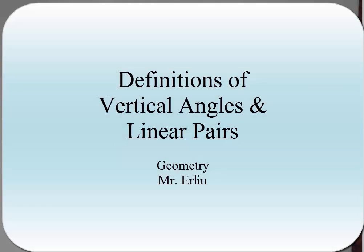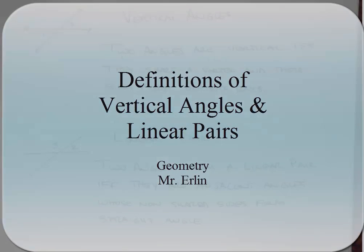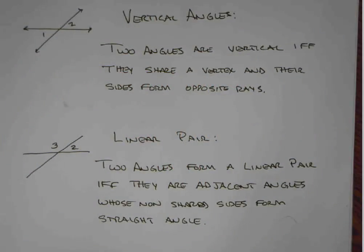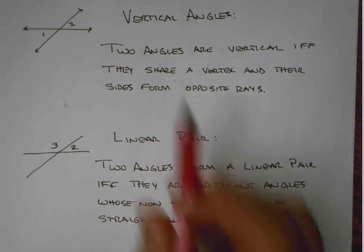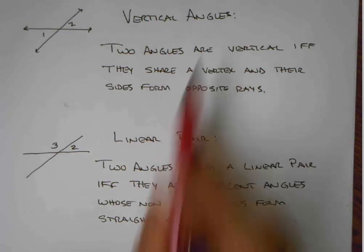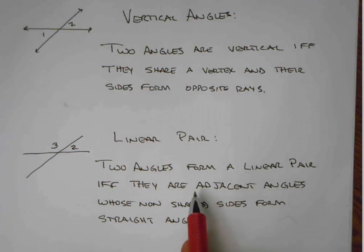Welcome back. This is Mr. Erland, continuing our discussion on parallel and intersecting lines. When we have intersecting lines, those lines form two types of angles. One type is called vertical angles, and one type is called linear pairs.